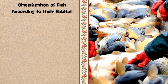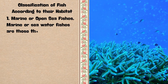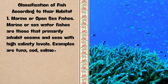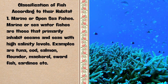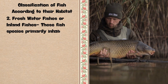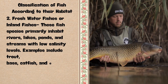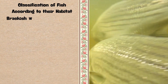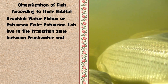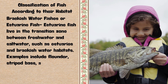Here are the classifications of fish according to their habitat. 1. Marine or Open Sea Fishes — those that primarily inhabit oceans and seas with high salinity levels. Examples: tuna, cod, salmon, flounder, mackerel, swordfish, sardines. 2. Freshwater or Inland Fishes — fish species that primarily inhabit rivers, lakes, ponds, and streams with low salinity levels. Examples include trout, bass, catfish, and carp. 3. Brackish Water or Estuarine Fishes — fish that live in the transition zone between freshwater and saltwater, such as estuaries and brackish water habitats. Examples include flounder, striped bass, and mullet.